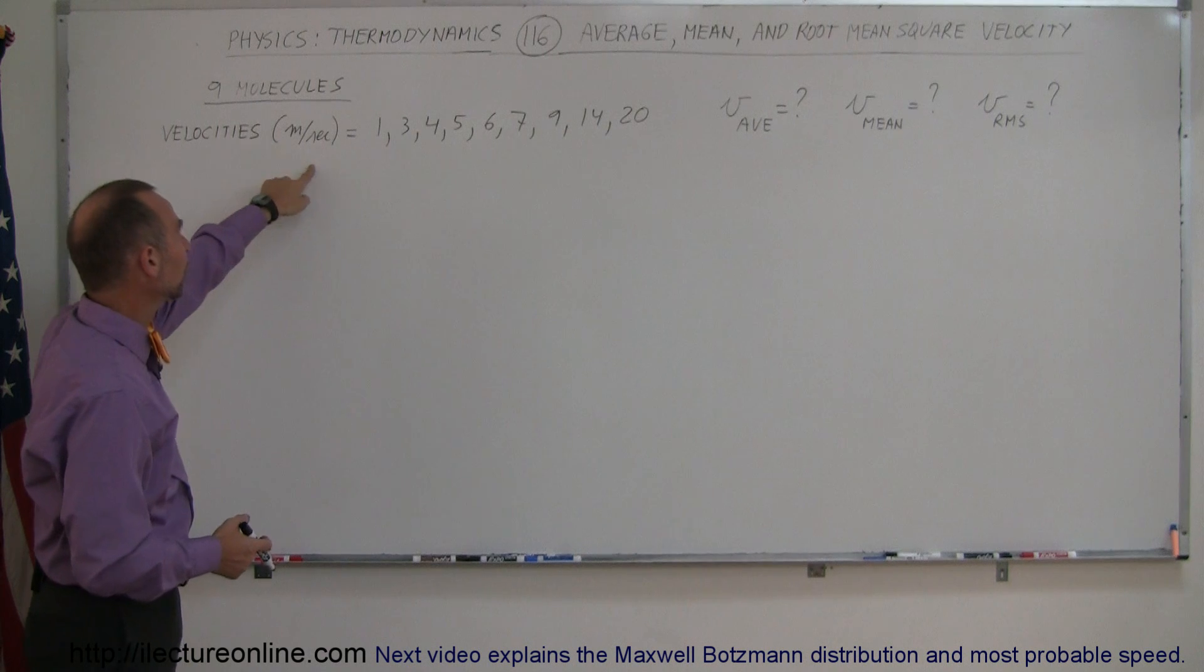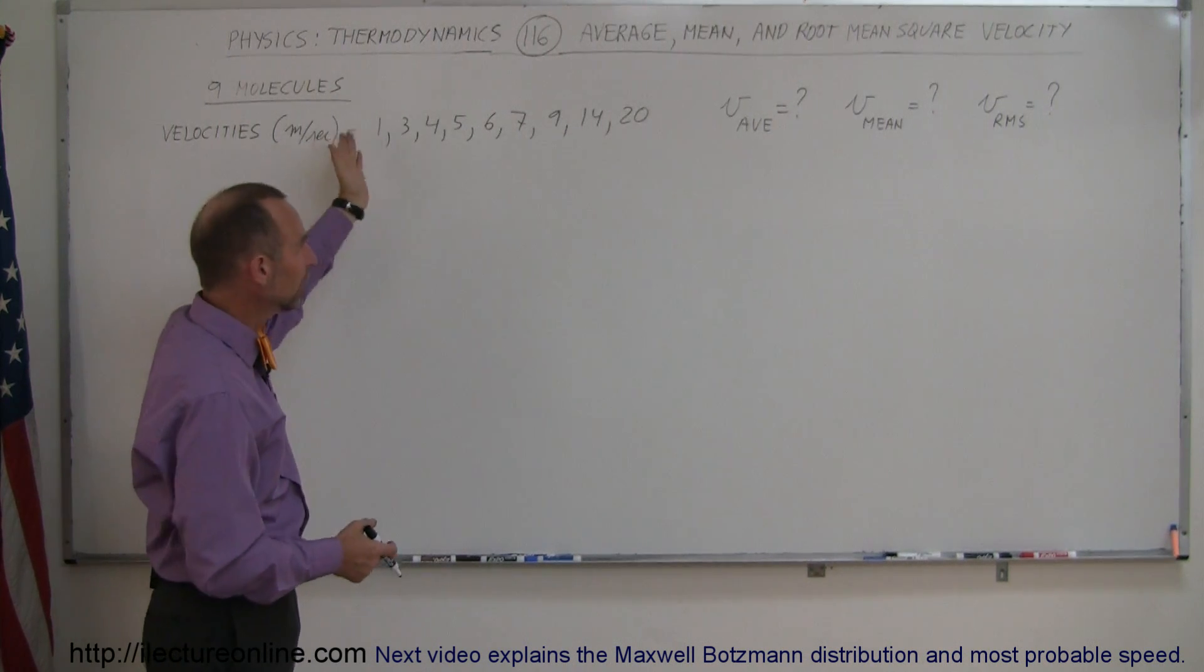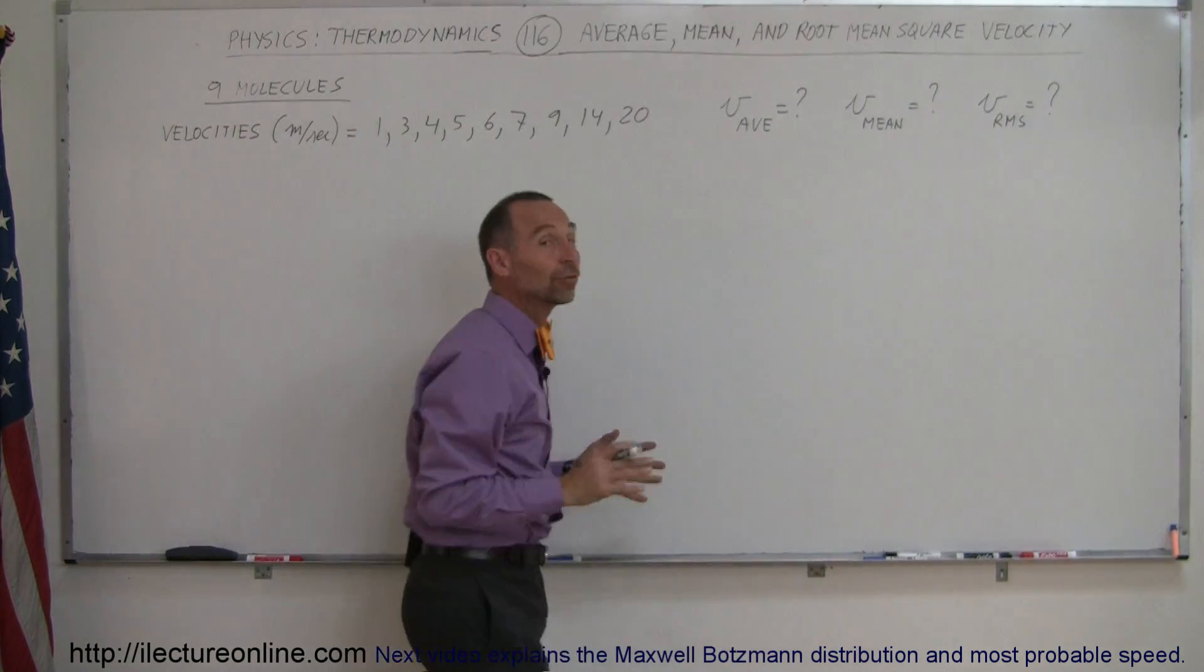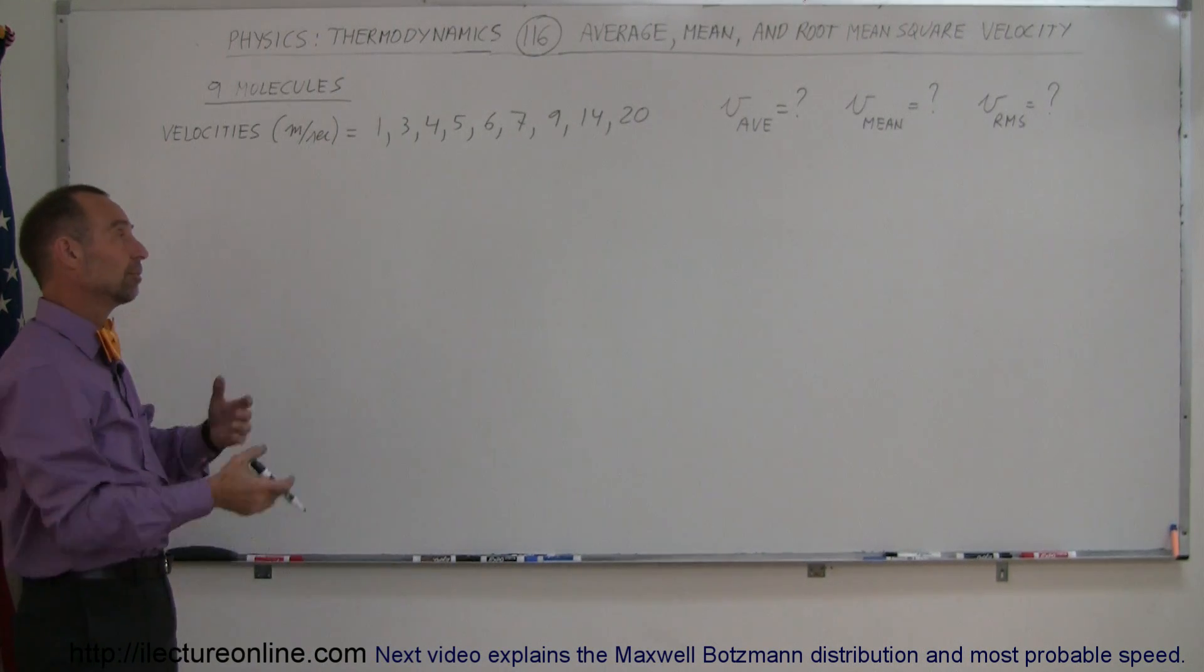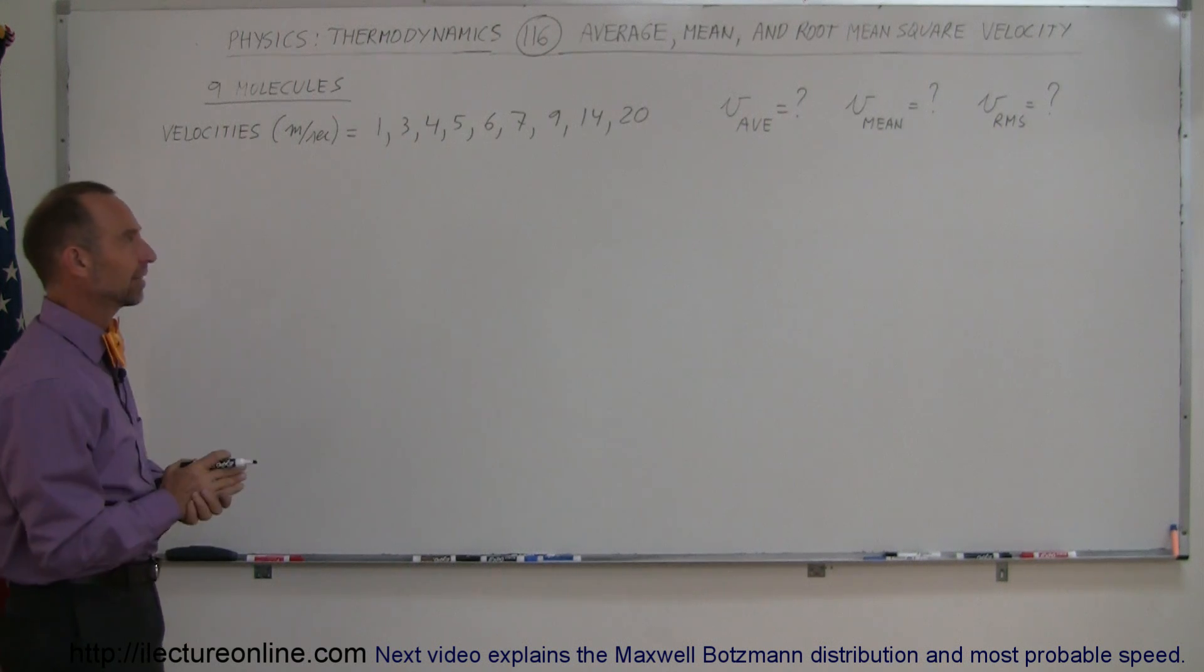with velocities in meters per second of 1, 3, 4, 5, 6, 7, 9, 14, and 20, they're the nine velocities, and we're supposed to find the average, the mean, and the RMS velocities of those molecules. And this could be anything, could be the masses, could be the momentums, doesn't matter, the method and technique would be exactly the same.